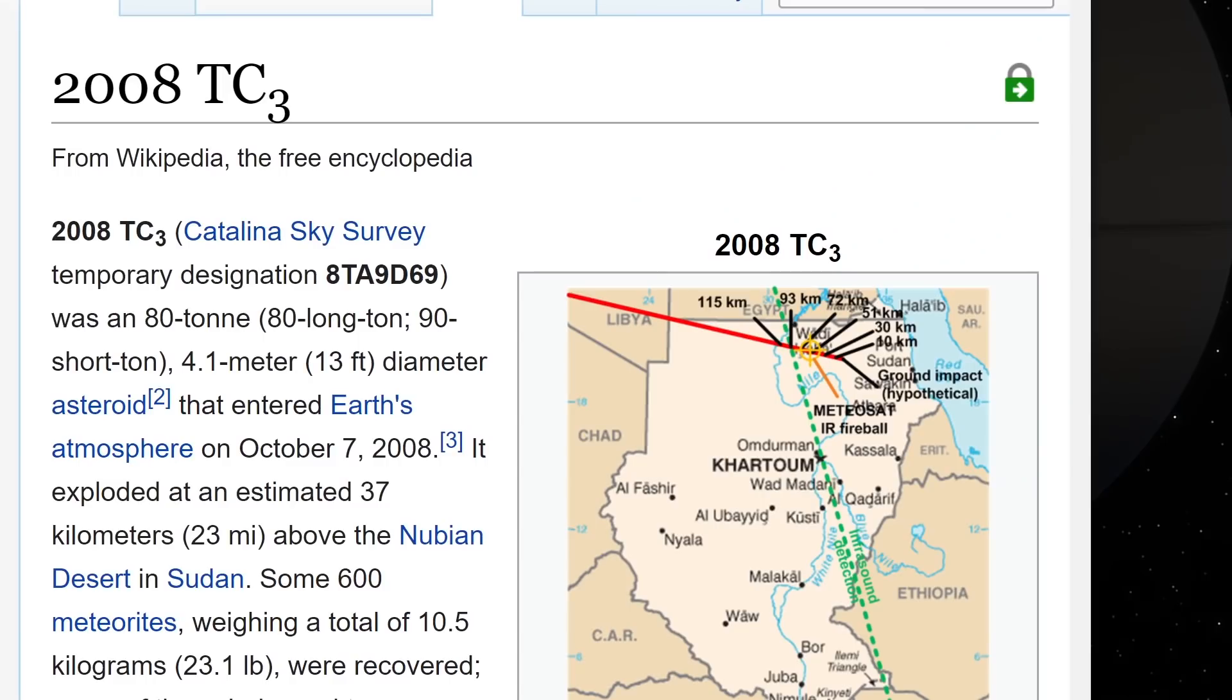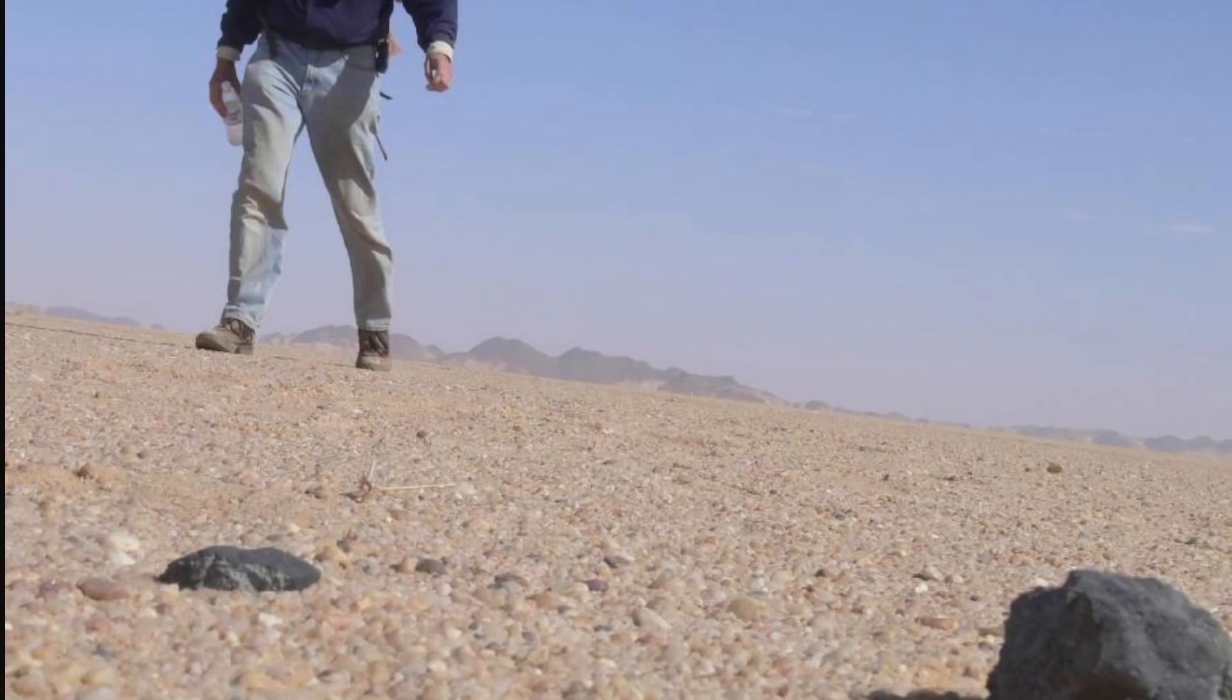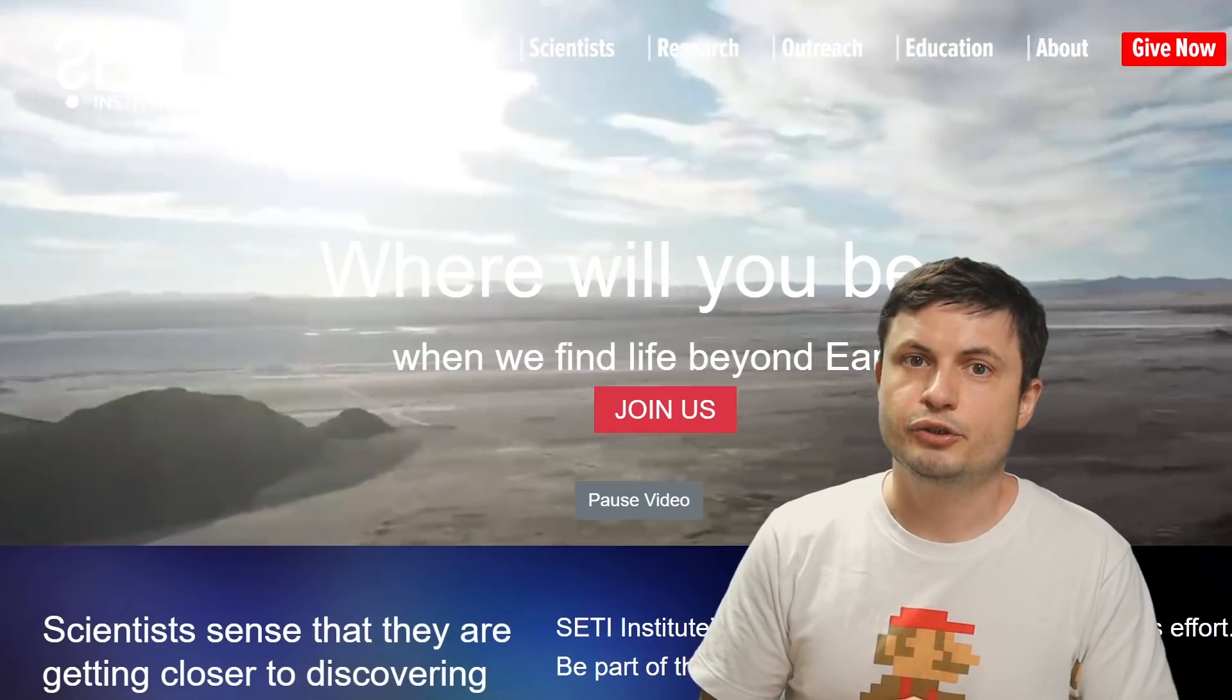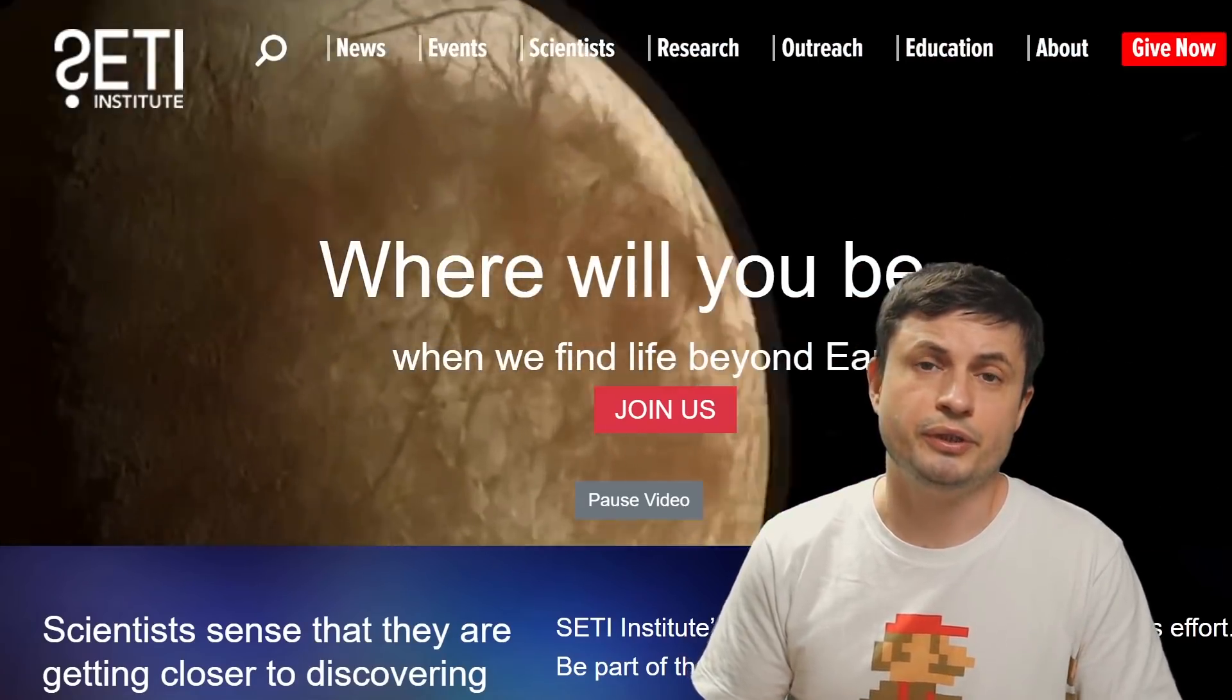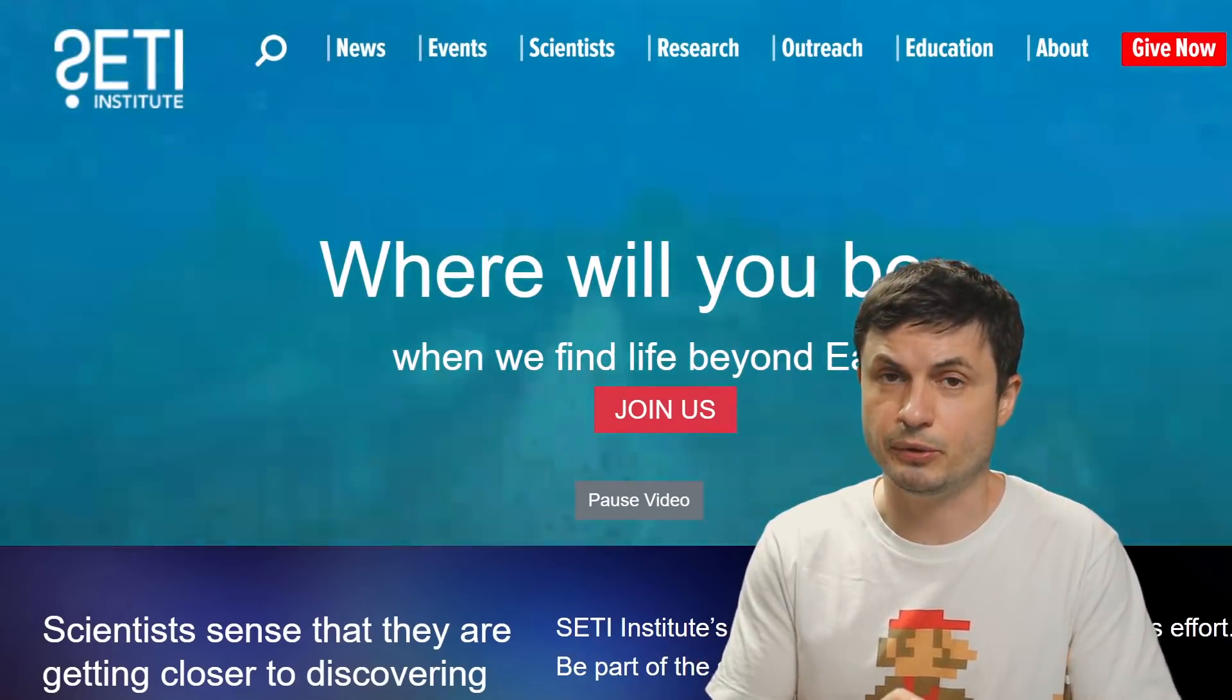And so this is technically one of the only detections of an asteroid before it collides with the planet. The only other detection being this one right here from 2008, known as 2000TC3. Unsurprisingly, this was also from Africa, but from Northeast Africa. With the important part here being the ability to track these asteroids, and to also further recover them for further analysis.